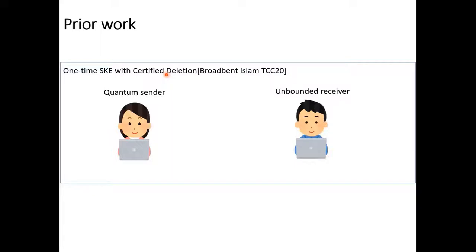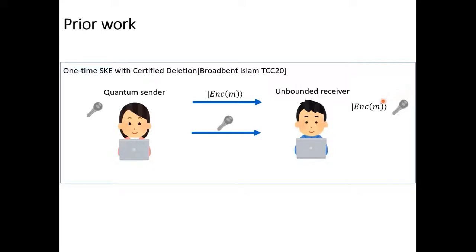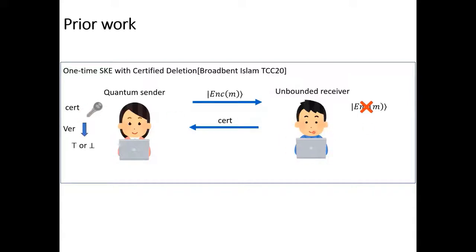This quantum primitive works as follows. First, the sender generates a classical secret key. Then, she generates a quantum ciphertext and sends it to the receiver. If he receives a secret key, he can decrypt the ciphertext by running a decoding algorithm on them. On the other hand, after she sends a quantum ciphertext, she can check whether he deleted the quantum ciphertext correctly. If she wants to delete the quantum ciphertext, she requests him to delete the ciphertext. After that, she receives a classical certificate, which guarantees that he deleted the ciphertext. Then, she checks whether this certificate is correct or not using the secret key.